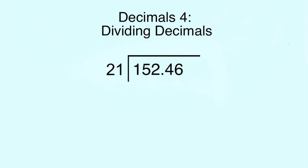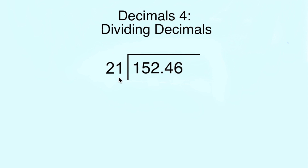Having moved the decimal point, we now have a whole number as the outside number and we can move on to the long division process. So 21 does not go into 1, and we can't fit 21 into 15 either.